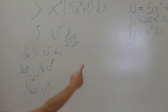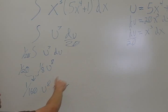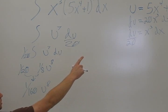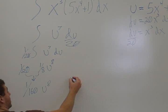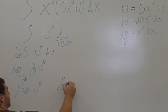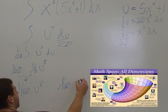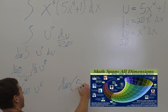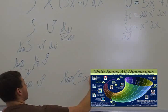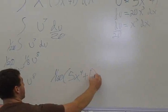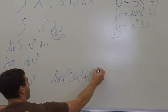Now we finish by resubstituting u back in for 5x⁴ + 1. So we get 1/160 times (5x⁴ + 1)⁸.